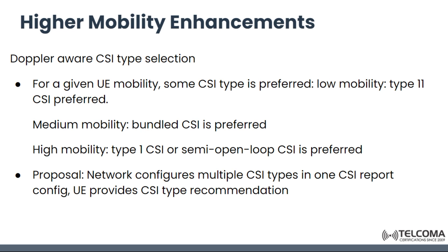Next is Doppler-aware CSI type selection. For a given UE mobility level, a specific CSI type is preferred: for low mobility, Type 2 CSI is preferred; for medium mobility, bundled CSI is preferred; and for high mobility, Type 1 CSI or semi-open loop CSI is preferred. The proposal is that the network can configure multiple CSI types in one report configuration, and the UE provides type recommendations.